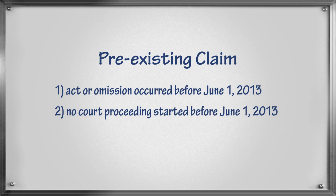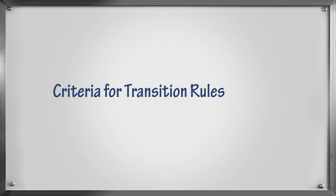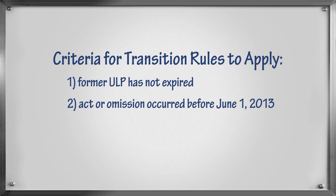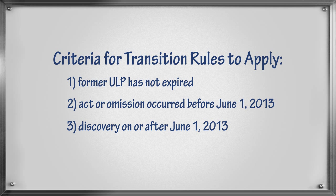The transition rules apply to pre-existing claims if three things happen. First, the former ultimate limitation period that governed the claim under the former Limitation Act has not yet expired. Second, the act or omission on which the legal problem is based must have occurred before June 1, 2013. Third, the person has to discover that they have a claim on or after June 1, 2013.